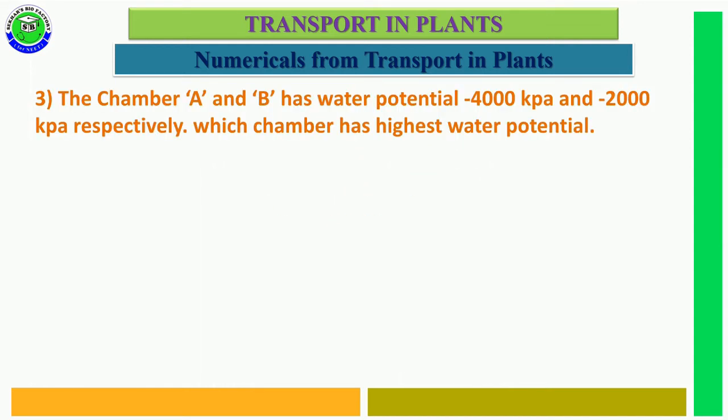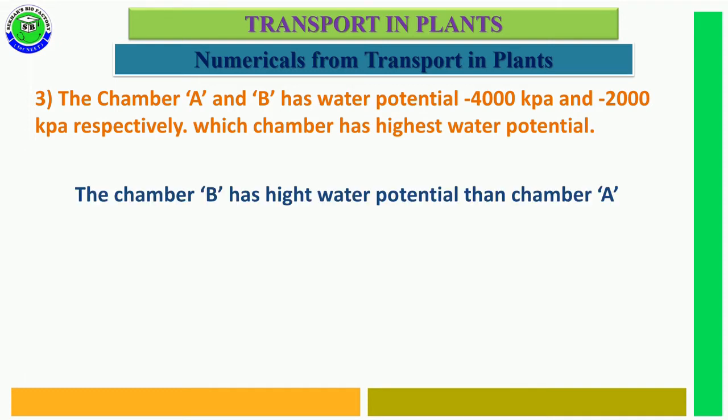Question number 3. Chamber A and B have water potentials of minus 4000 kilopascals and minus 2000 kilopascals respectively. Which chamber has the highest water potential? The answer is chamber B, because minus 2000 is higher than minus 4000.